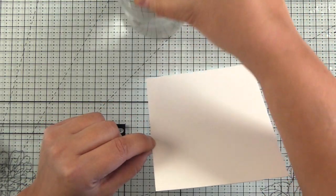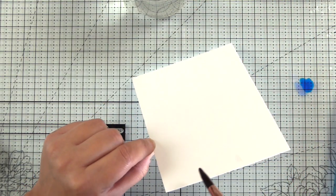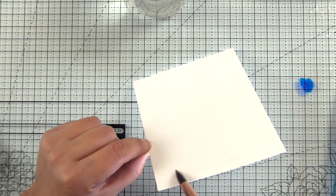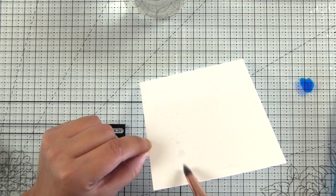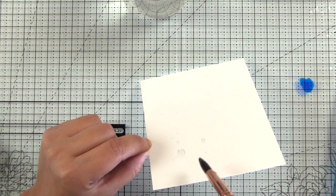For each background I used an A2 size piece of watercolor paper from the Altenew watercolor paper set. It's pre-cut to A2 size, which is four and a quarter by five and a half. I have some clean clear water and a round brush here.